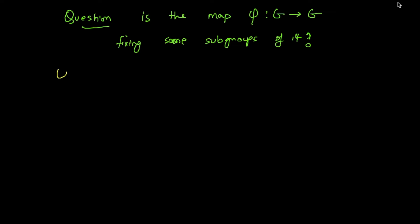This map phi is called an automorphism. It is a special type of map which maintains the group structure. All that means is phi of A times B equals phi of A times phi of B. Not all maps are automorphisms.